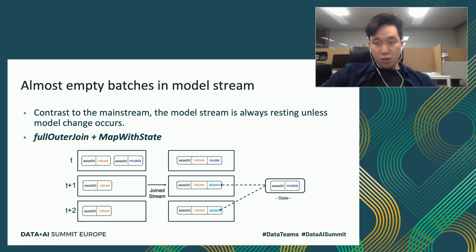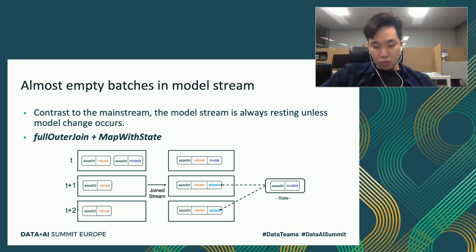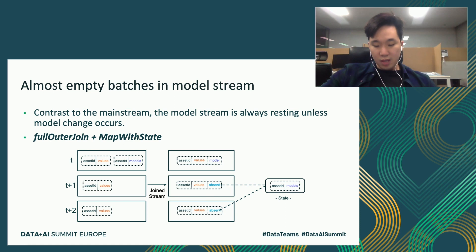As mentioned, in contrast to the sensor trace stream, the model stream is always at rest unless a model change occurs. To avoid the unnecessary re-execution in updateStateByKey, instead we use the full outer join and the mapWithState function. After joining the two streams — value and model — where the key is the asset ID, there are some absent values at t1 and t2 batches. We can replace the absent value with the model context stored in the state space, then compute the health score. We can achieve this scenario using mapWithState, and also avoid unnecessary execution of updateStateByKey when a large number of assets are given.